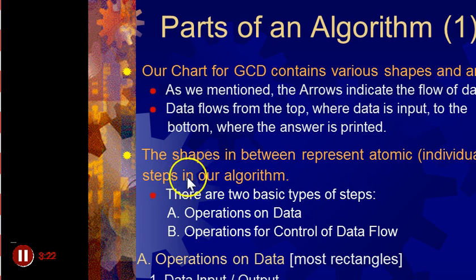Operations on data means data input and output, data transformation, and data storage. So these are data transformation because B is changing. I guess A is changing. We're inputting here. We're storing data somewhere, probably, and so on.